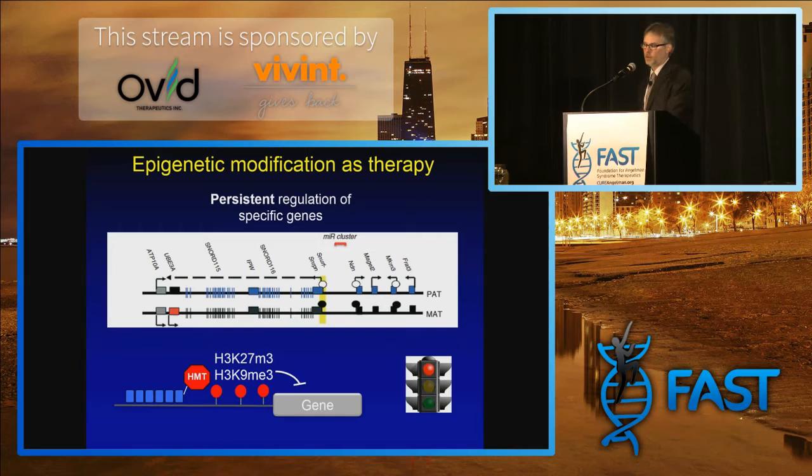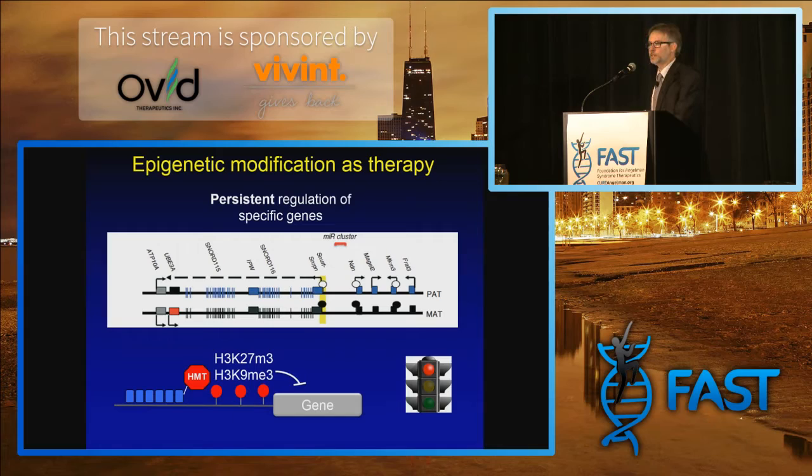We're trying to use that same machinery so that we can shut down this antisense transcript in a more persistent way. We're going to make artificial transcription factors that now contain some of these epigenetic modifying enzymes. And we have good reasons to suspect that this will work, because this is actually already happening at the Angelman locus.